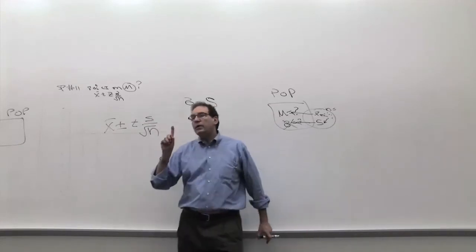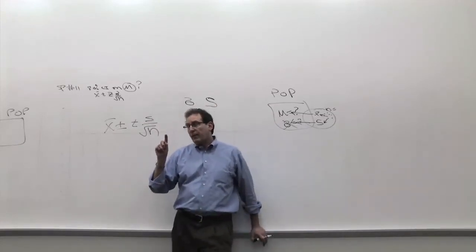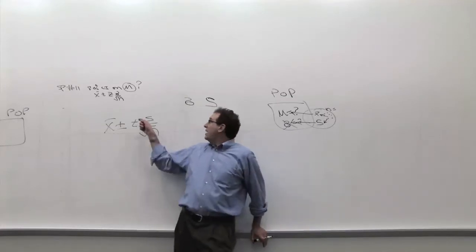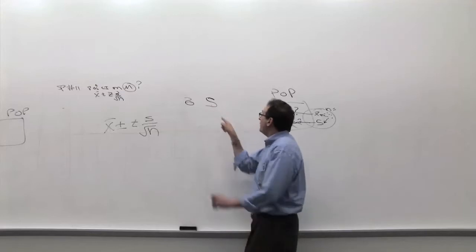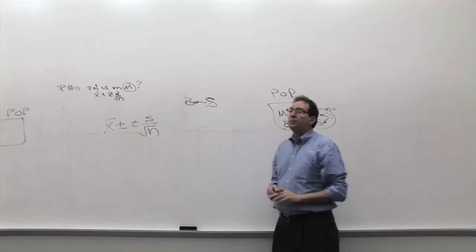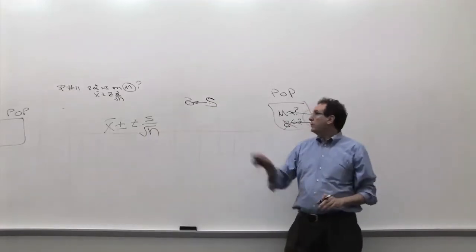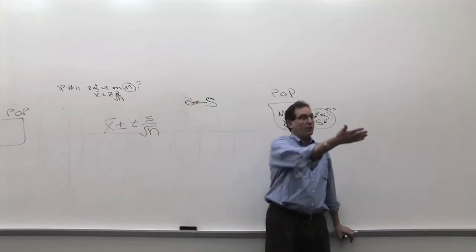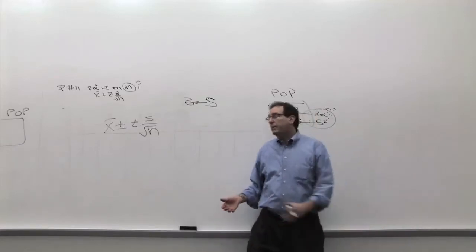So the t-table has one additional complication. In some ways, it's easier to use than the z-table, in one other way it's harder to use. Would you be more confident that this number here is a good substitute for this number if the sample was larger or the sample is smaller? Is this going to be a good estimate of sigma when the sample is larger or the sample is smaller? With a large sample, you're going to get a better estimate.